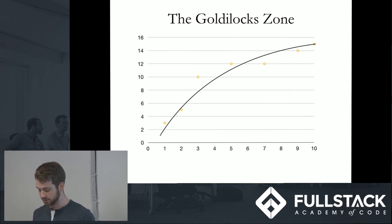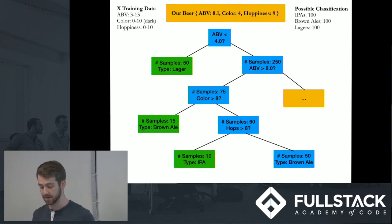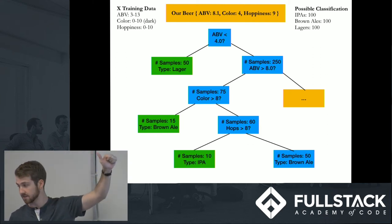So another way to do classification is I'm going to talk about decision trees. And I'm going to go back to this example we had earlier. So we're going to have a lot of X training data, which is for each of these three types of beers, we have IPAs, we have brown ales and lagers. We have 100 of them. For each of them, we're going to have an alcohol per volume content from 3 to 13. We're going to have a color from 0 to 10, 10 being the darkest and a happiness of 0 to 10. So we have this huge data set.